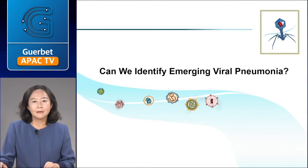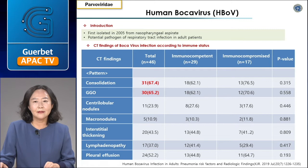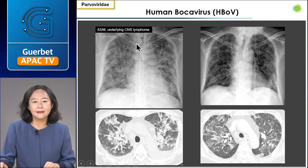I will introduce several severe emerging viral pathogens with their representative imaging and clinical findings. Human bocavirus was first isolated in 2005 from nasal wash aspirate. The main CT findings were bilateral consolidation and/or ground-glass opacities; centrilobular nodules were found less frequently. The pattern of CT findings was not significantly different between immune-compromised and immune-competent hosts. This is a 63-year-old patient with underlying CNS lymphoma showing bilateral ground-glass opacity and peribronchial consolidations without pleural effusion.